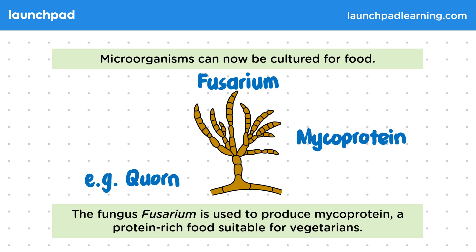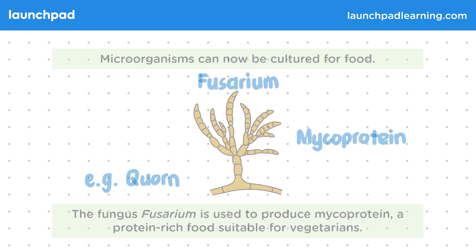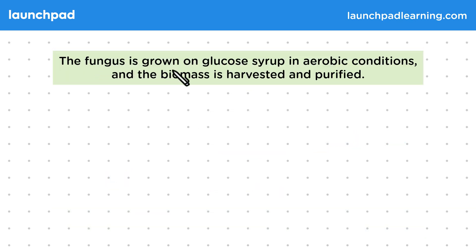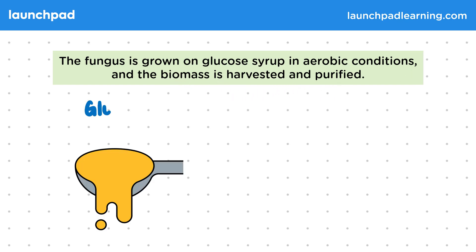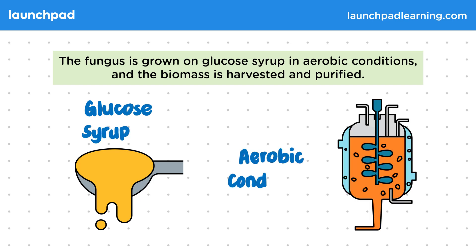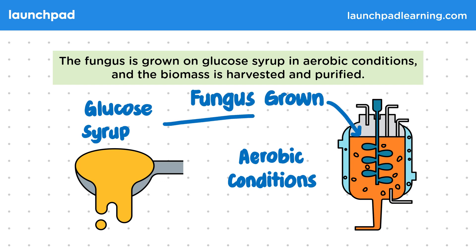The fungus is grown on glucose syrup in aerobic conditions, and the biomass is harvested and purified. This glucose syrup acts as a source of food for the fungus. Remember that aerobic conditions mean that oxygen is present, and these conditions are required for fungus growth.